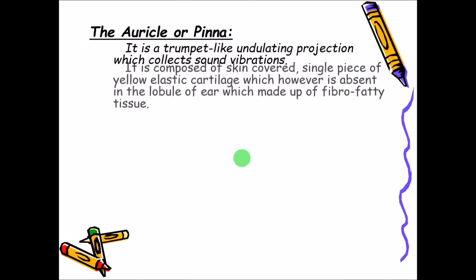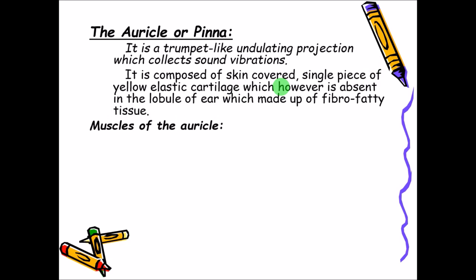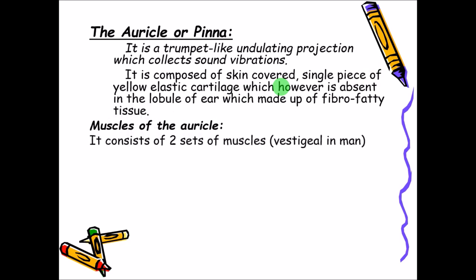The lobule is filled with a lot of fibrofatty tissue, so it is soft in nature. This whole auricle is covered by skin. There are some muscles in the auricle itself, but they are vestigial in the case of human beings. In lower animals they are functional and help in twisting and turning of the auricle depending on where the sounds are coming from.